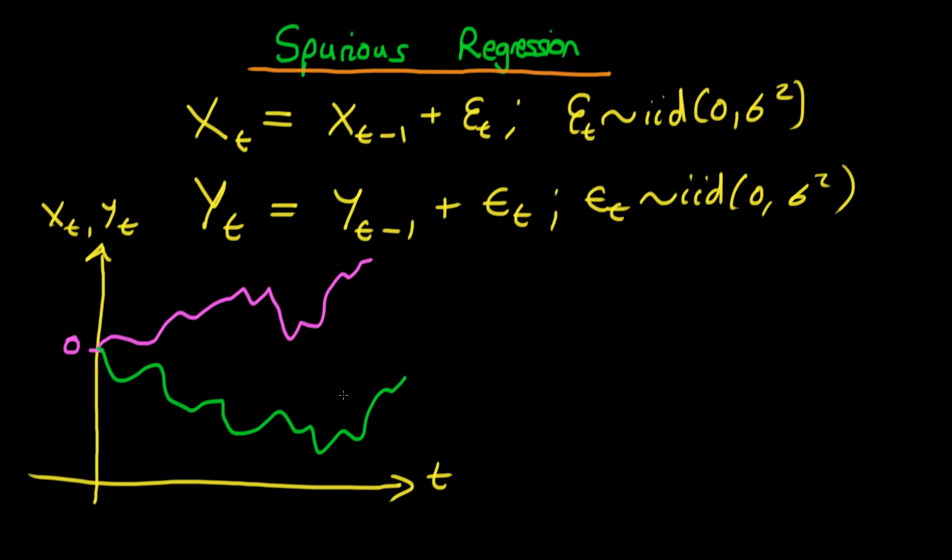but notice because these two series are both non-stationary, it appears if I was to then draw a scatterplot of one against the other, it would appear falsely like there was some sort of significant correlation between them.